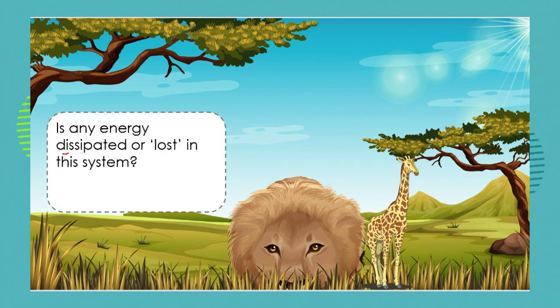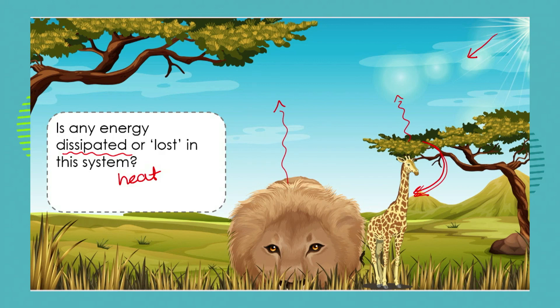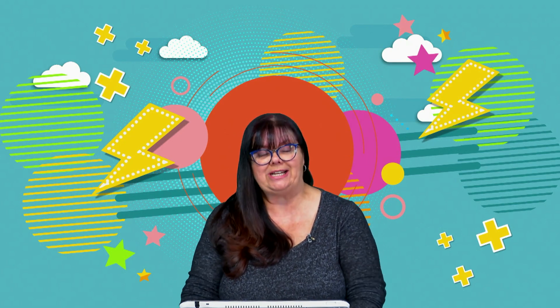We talk about this dissipated or lost energy, which refers to heat energy. If we added up the total energy coming into the system, the energy moving from plant to giraffe, plus the heat lost, the energy moving from giraffe to lion, plus the heat lost, and the energy the lion uses plus its heat loss, we find that the total energy within our system is conserved. We have the law of conservation of energy in biological systems as well.